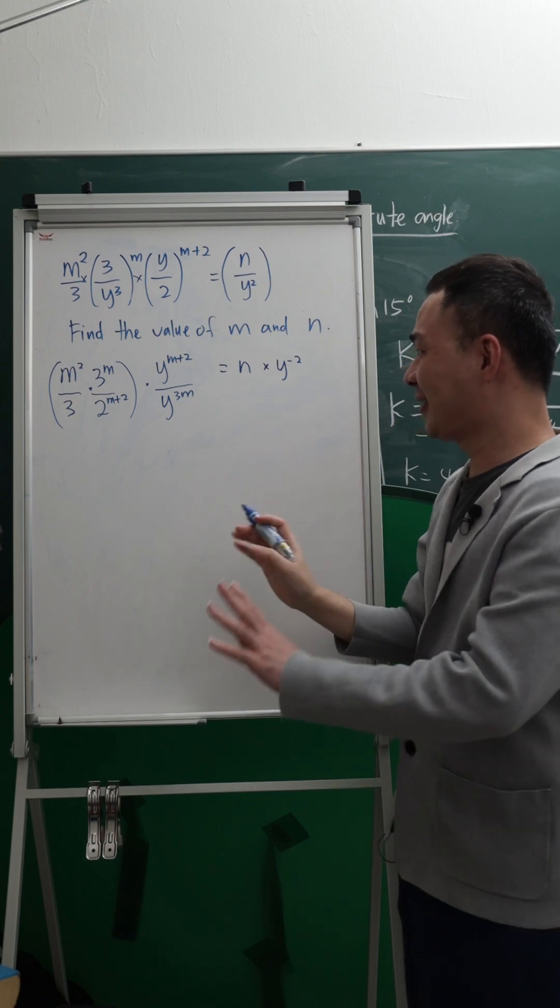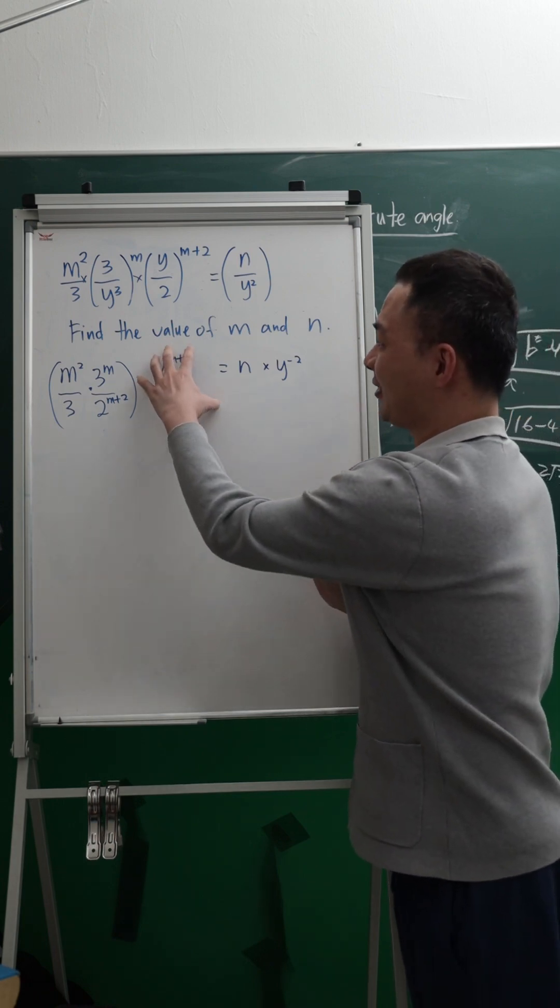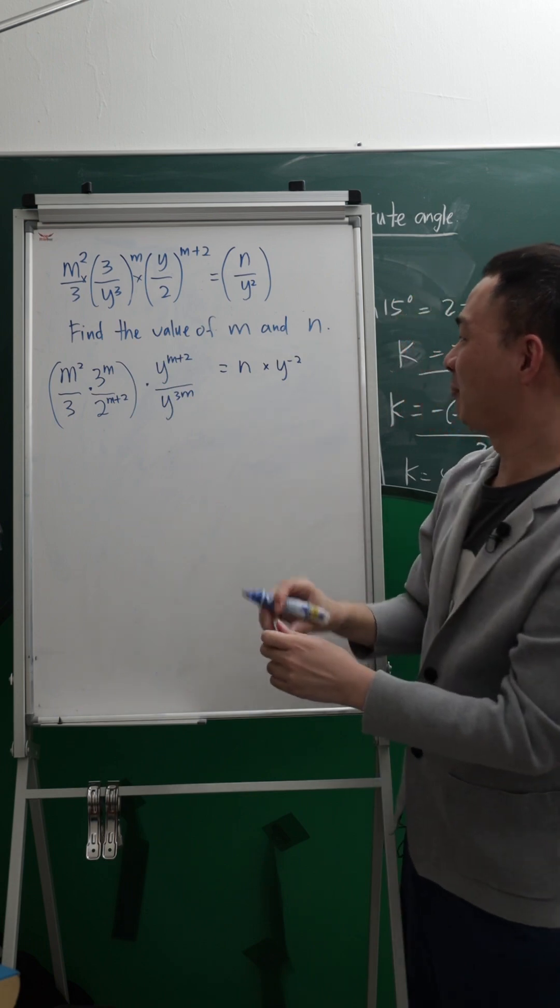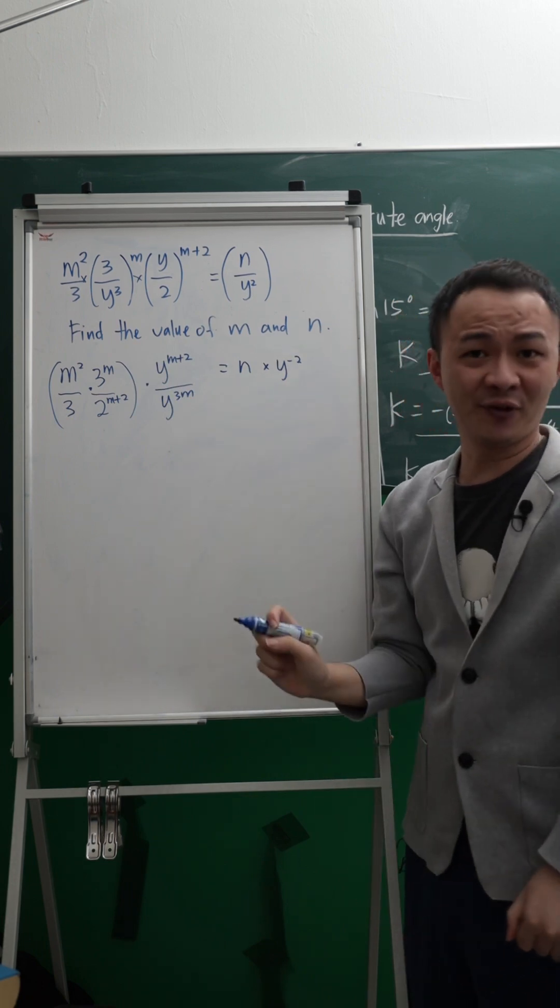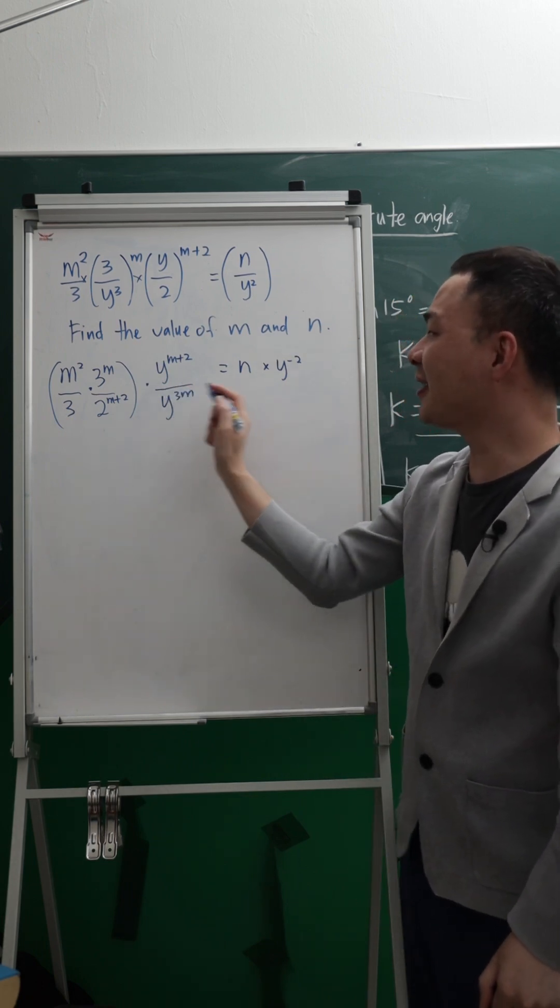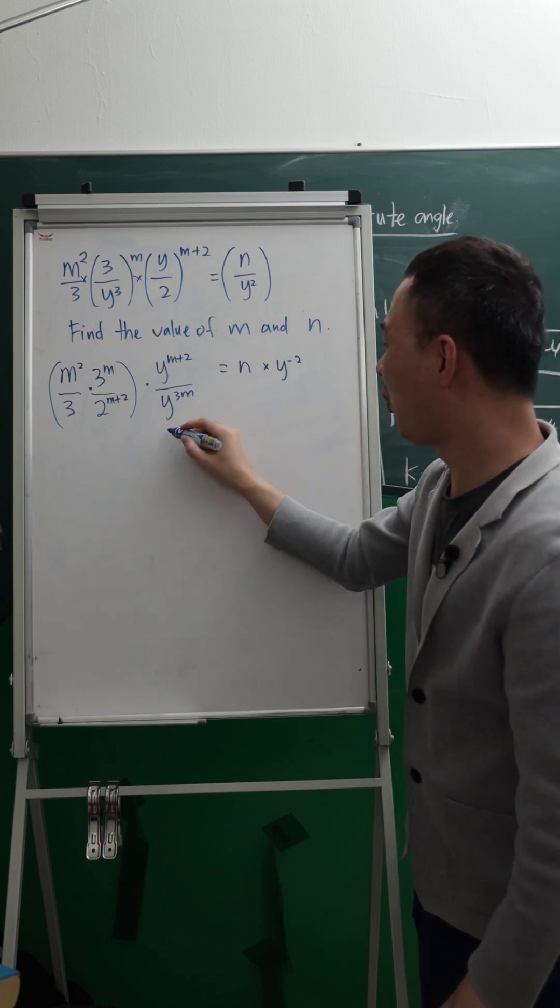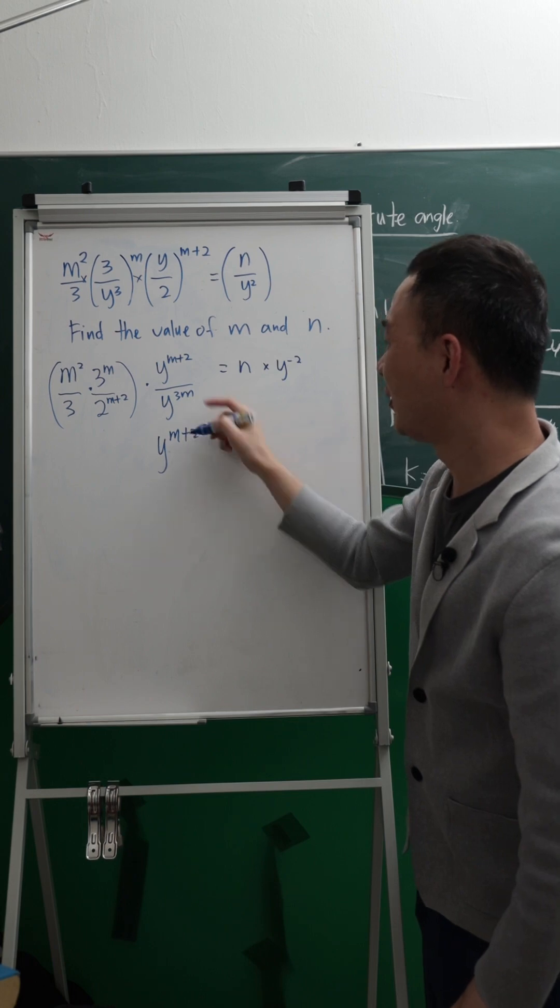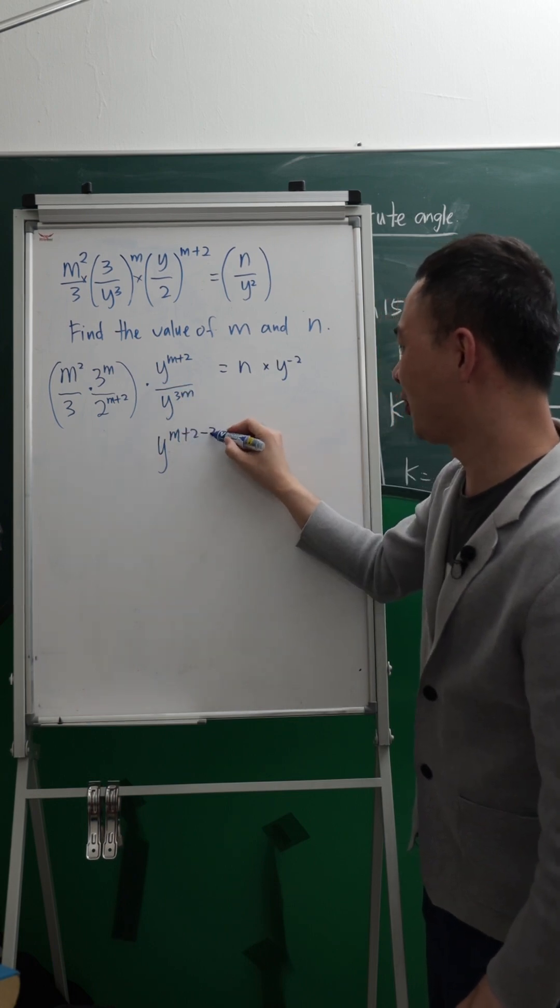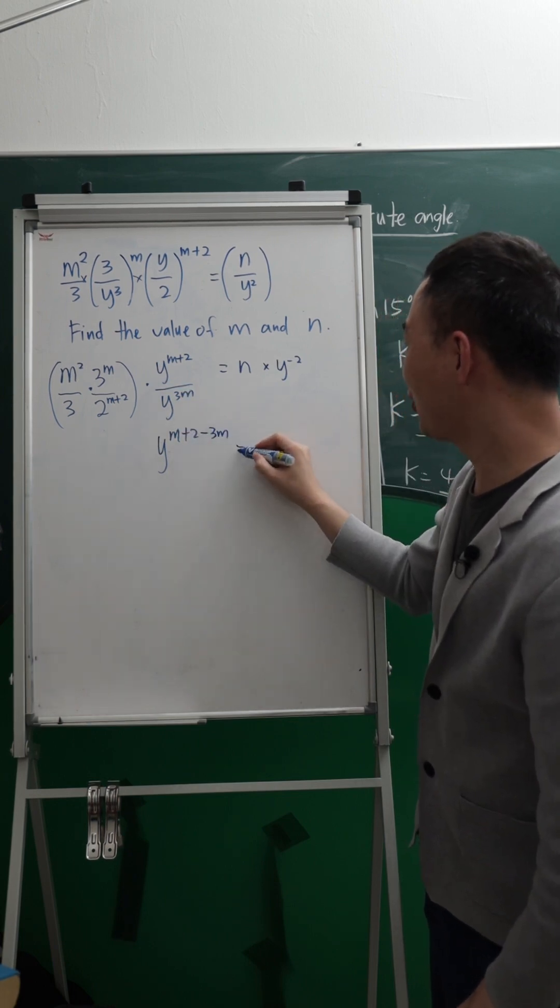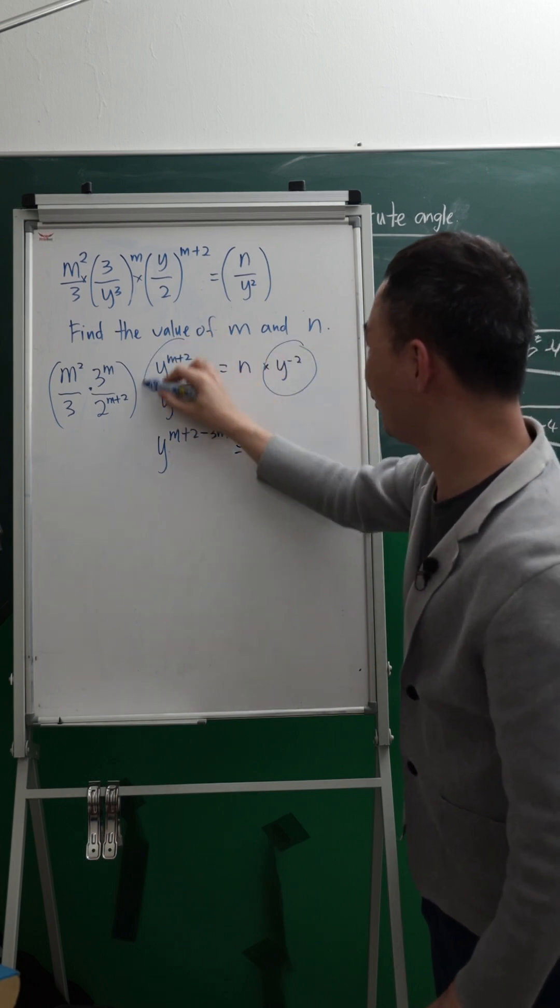Then over here, you can see what I'm trying to do is this whole thing must equal to Y power of negative 2. So that means, indices law tells me divide basically means minus. So Y M plus 2 divide, which means minus 3 power of M, must equal to this thing.